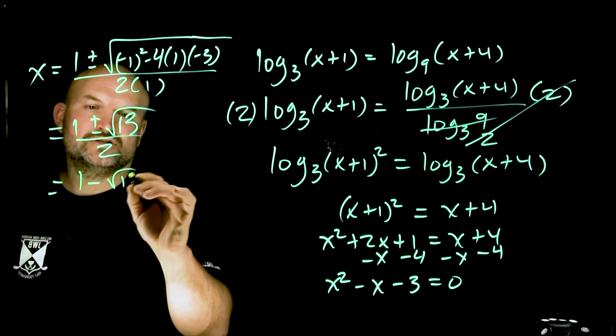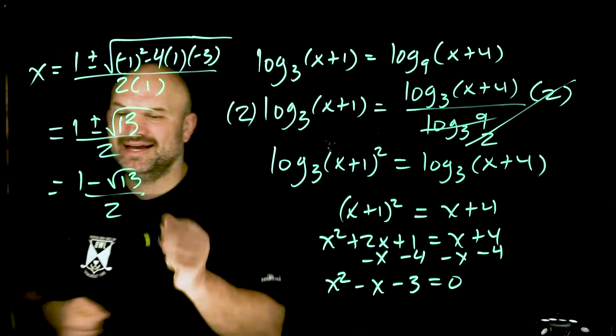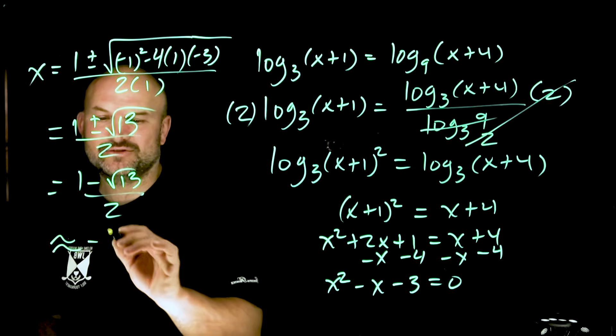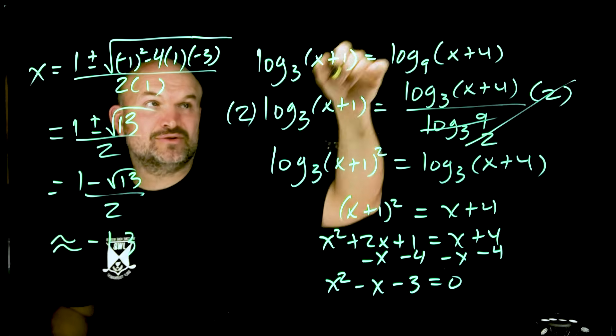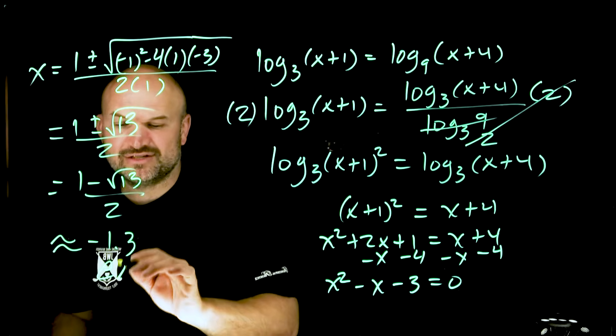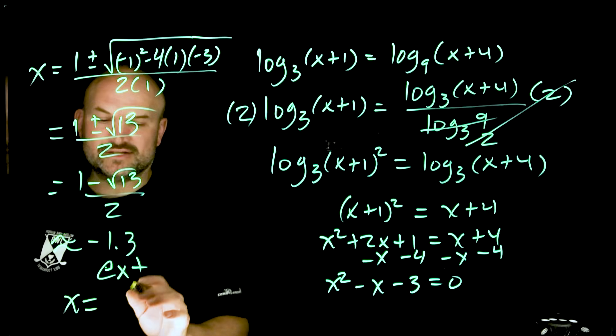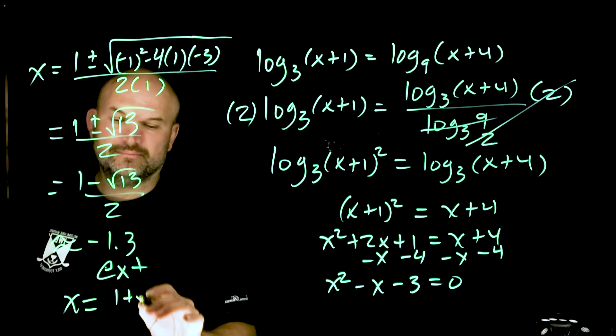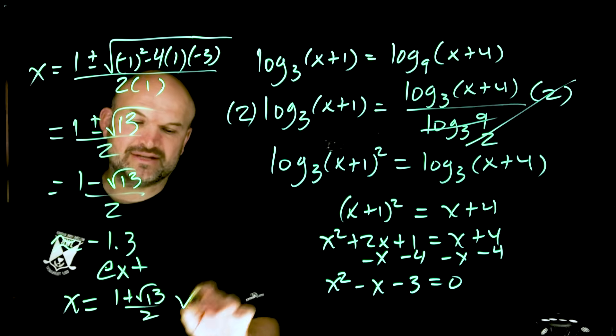1 minus square root of 13 divided by 2, and actually if we approximate this, it's going to be negative 1.3. So therefore that's going to make the argument inside that logarithm extraneous. So this is an extraneous solution. So therefore our only solution is going to be the positive value of 1 plus the square root of 13 divided by 2.